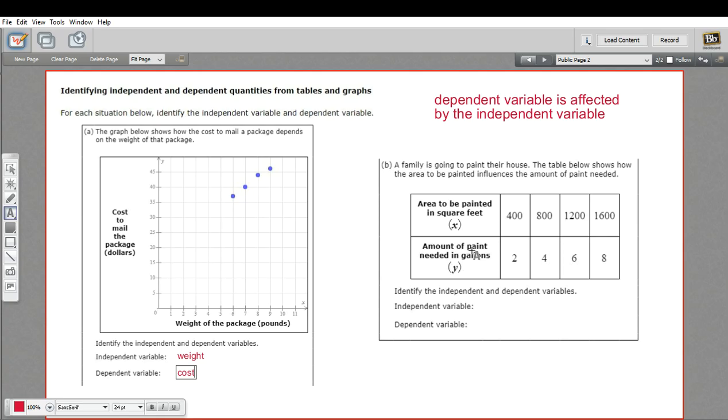So the amount of paint is being affected by the area you need to paint. The bigger the area you need to paint, the more paint you're going to need. So again here, the x is our independent variable, that's the area. And the dependent variable, the one that's affected by that, is the amount of paint you need.